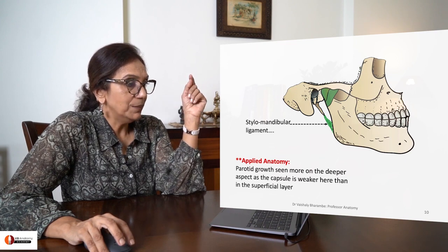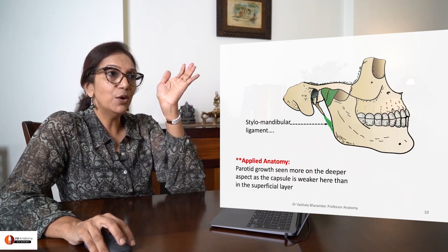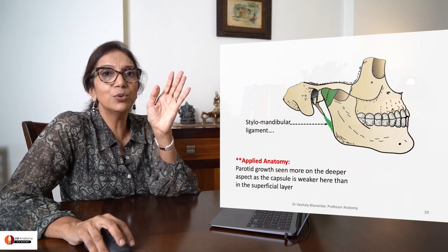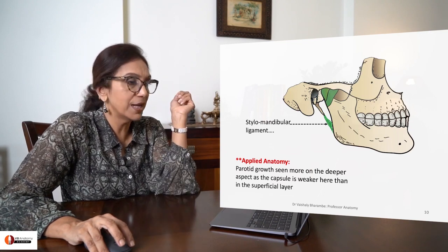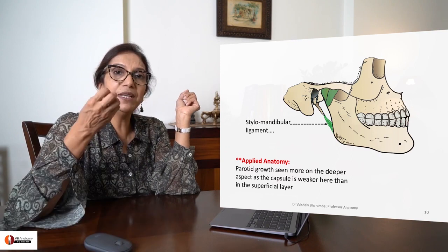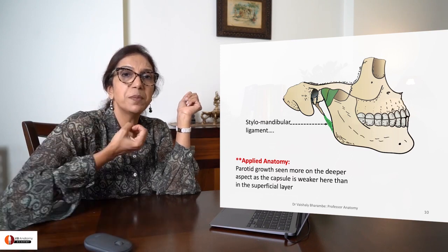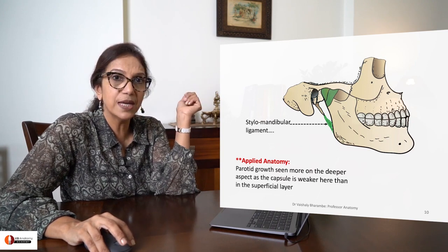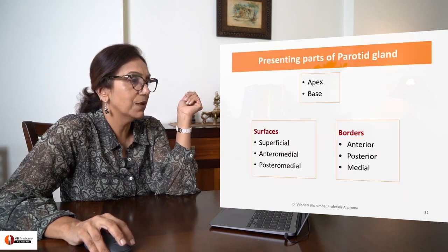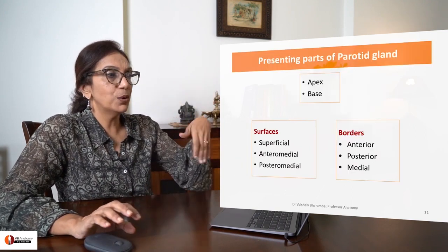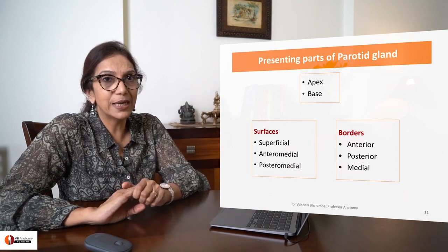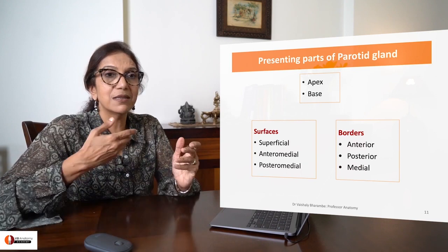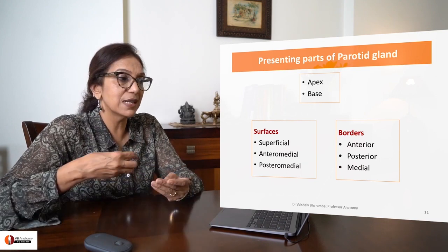Always remember that the layer on the deeper side is more flimsy compared to the superficial layer. Therefore, whenever there is a parotid growth, it tends to spread out on the deeper side because this layer is much weaker. So now let us talk about the presenting parts of parotid gland. It has an apex and a base, three surfaces and three borders.